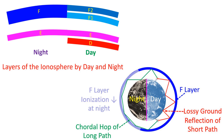Less lossy ground reflections can also occur if the reflections are from seawater, which contains plenty of salt, and this can occur during daytime as well.